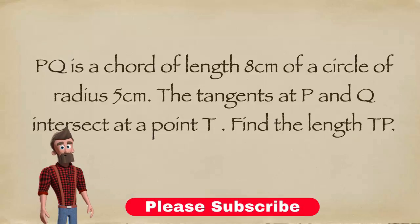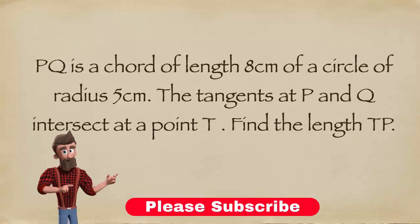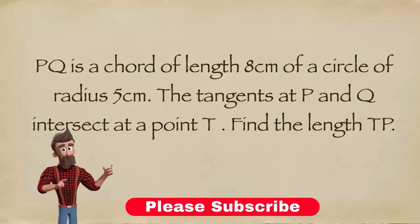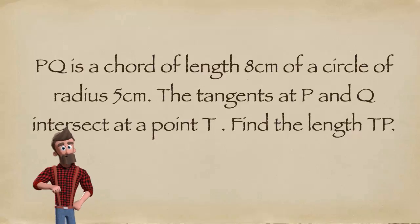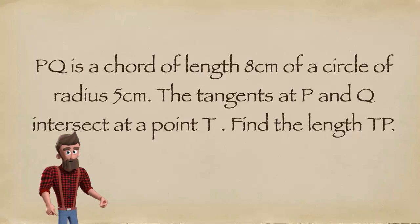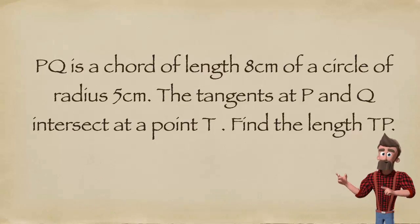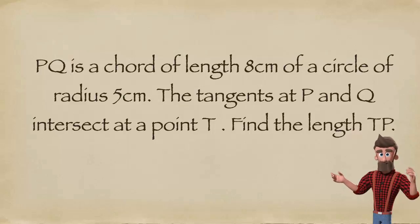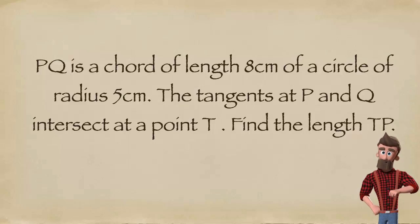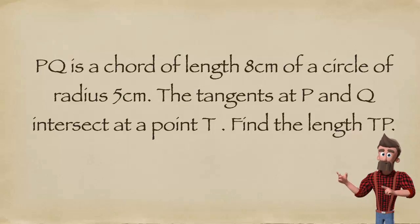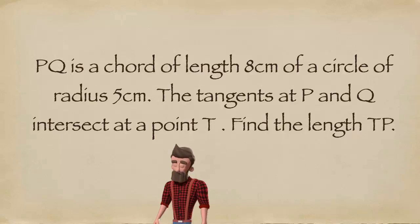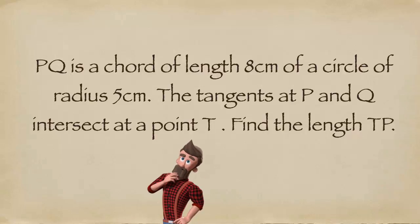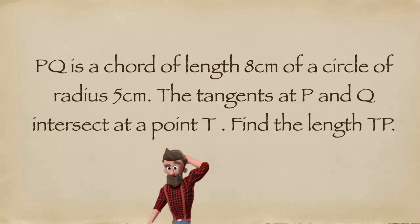Here is the question: PQ is a chord of length 8 centimeters of a circle of radius 5 centimeters. The tangents at P and Q intersect at a point T. Find the length TP.